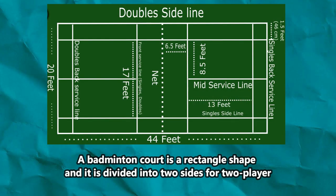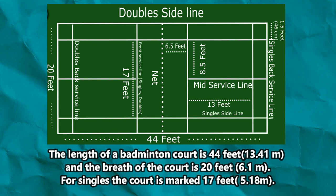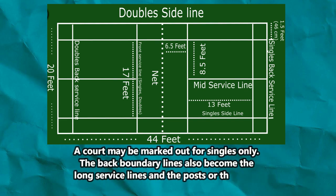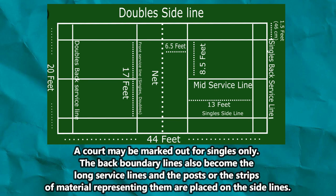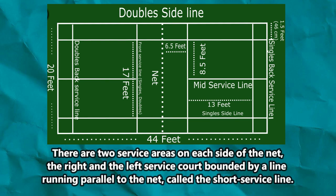The court: A badminton court is rectangular and is divided into two sides. The length of a badminton court is 44 feet and the breadth is 20 feet. For singles, the court is marked at 17 feet wide, or 5.18 meters. A court may be marked for singles only; the back boundary lines also become the long service lines, and the posts are placed on the sidelines. There are two service areas on each side of the net — the right and left service courts — bounded by a line running parallel to the net called the short service line.